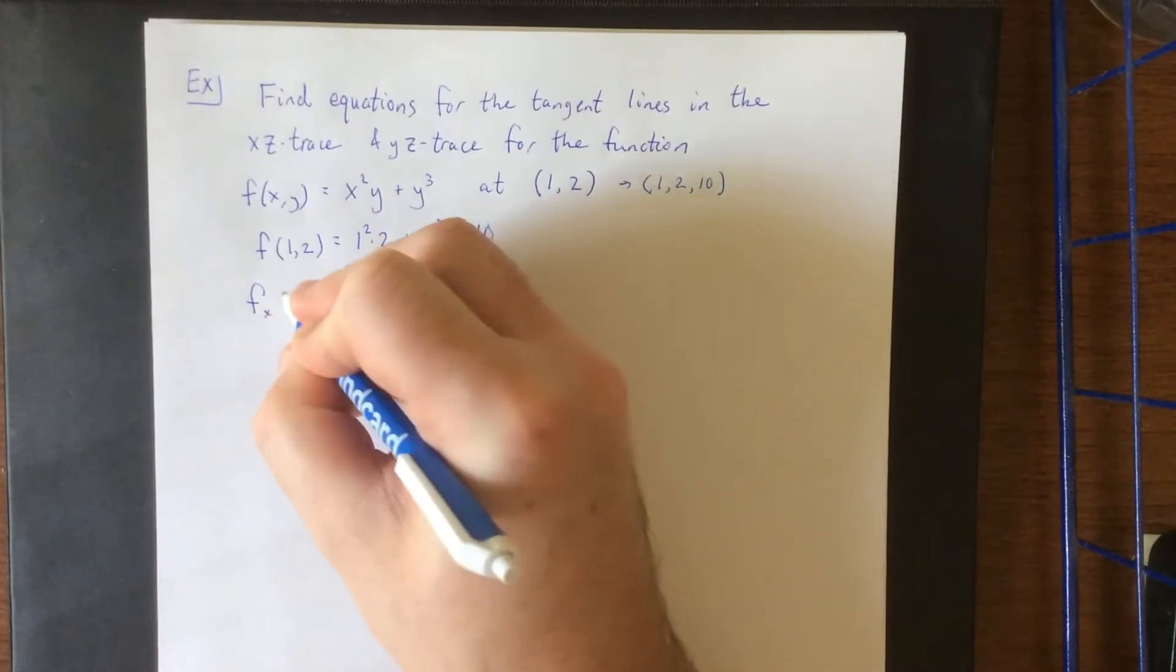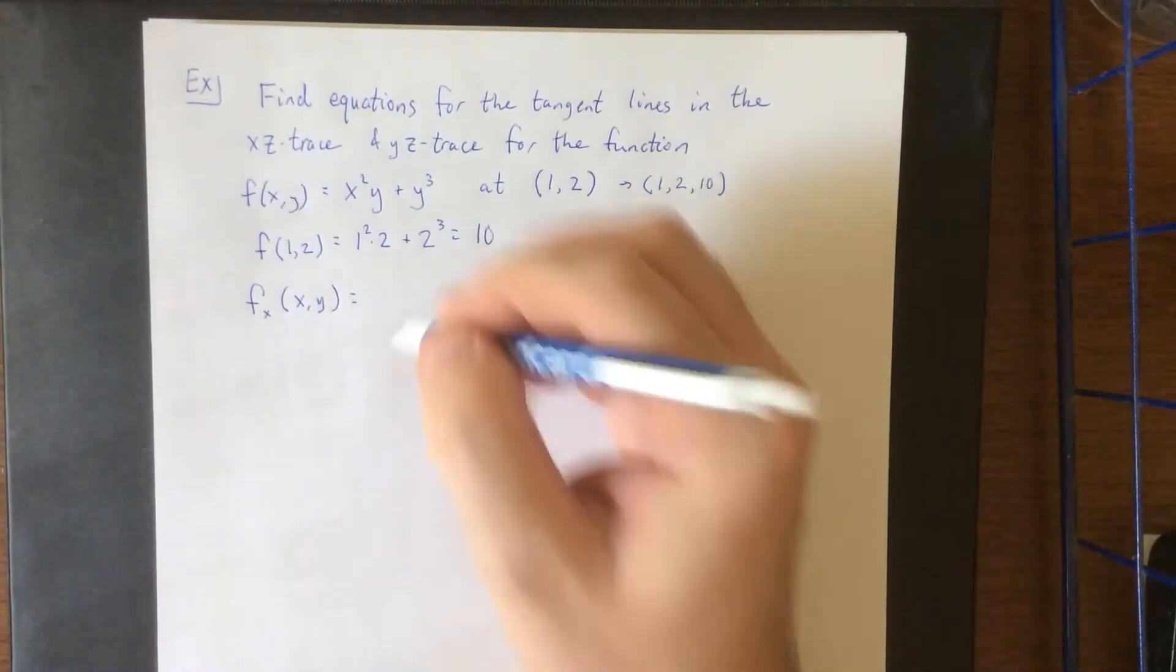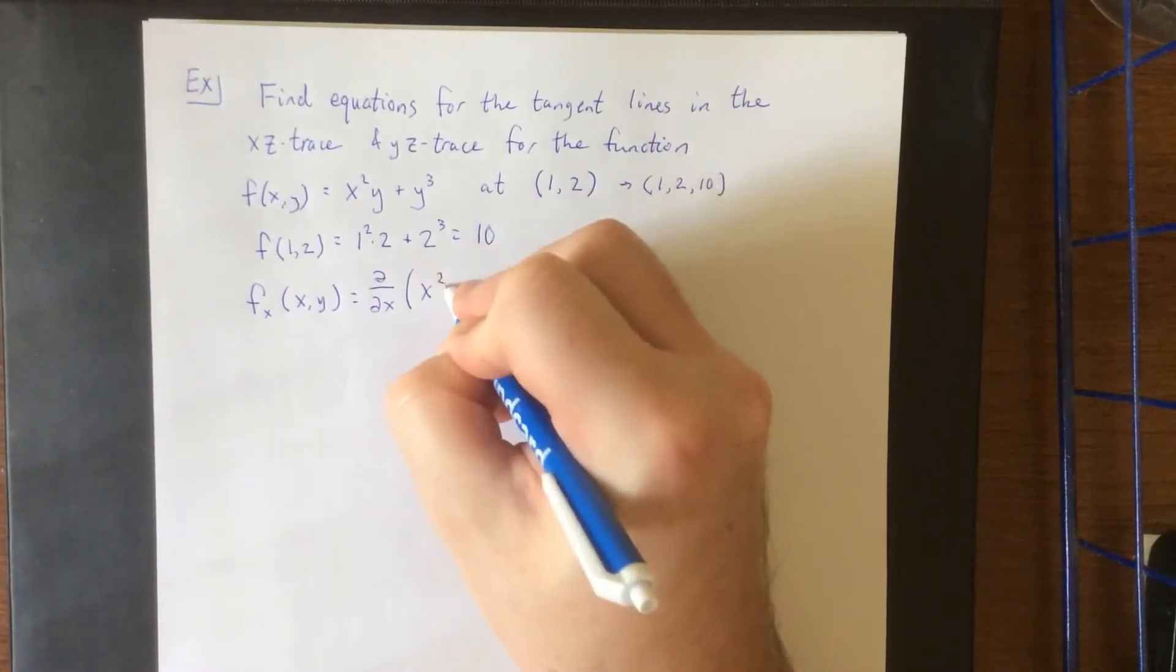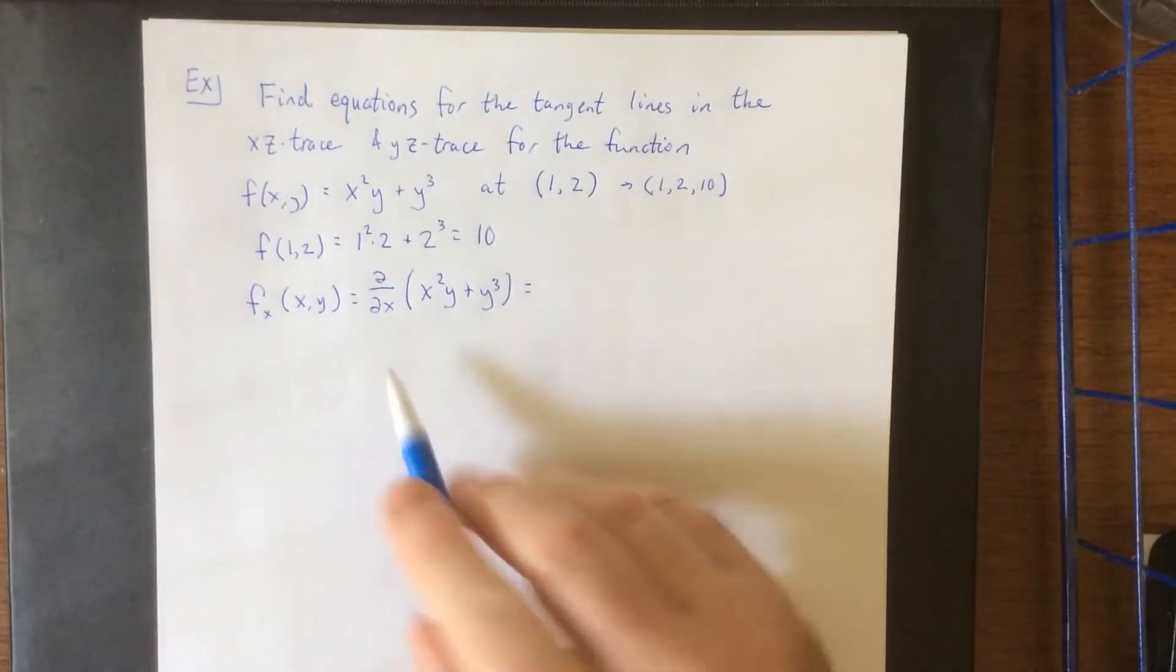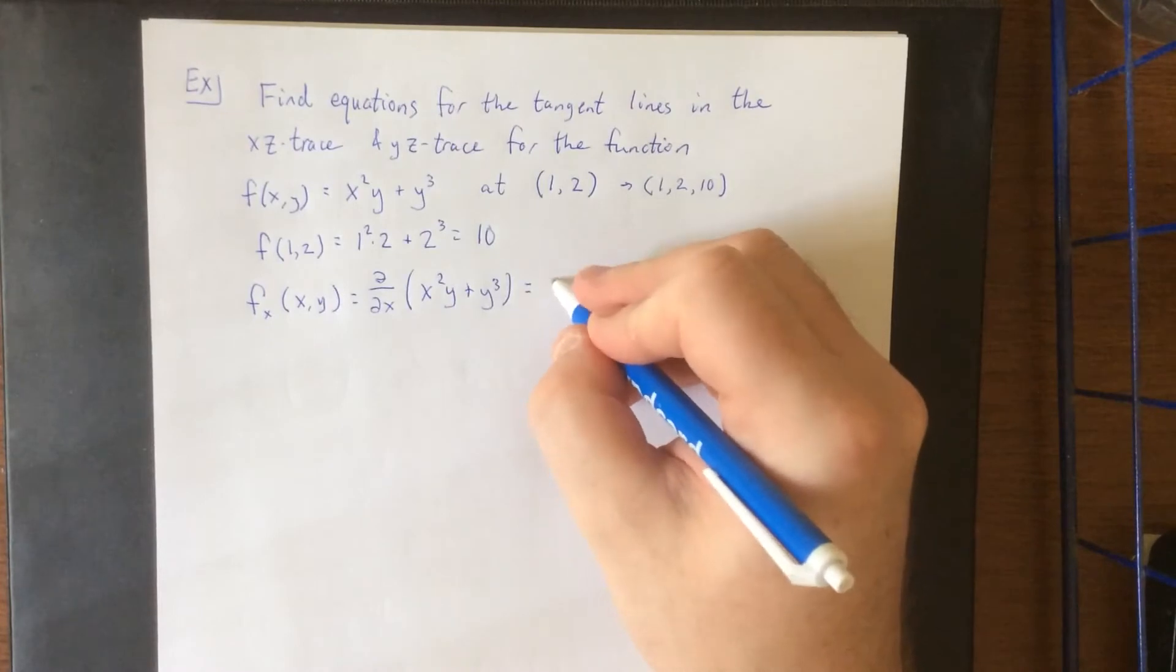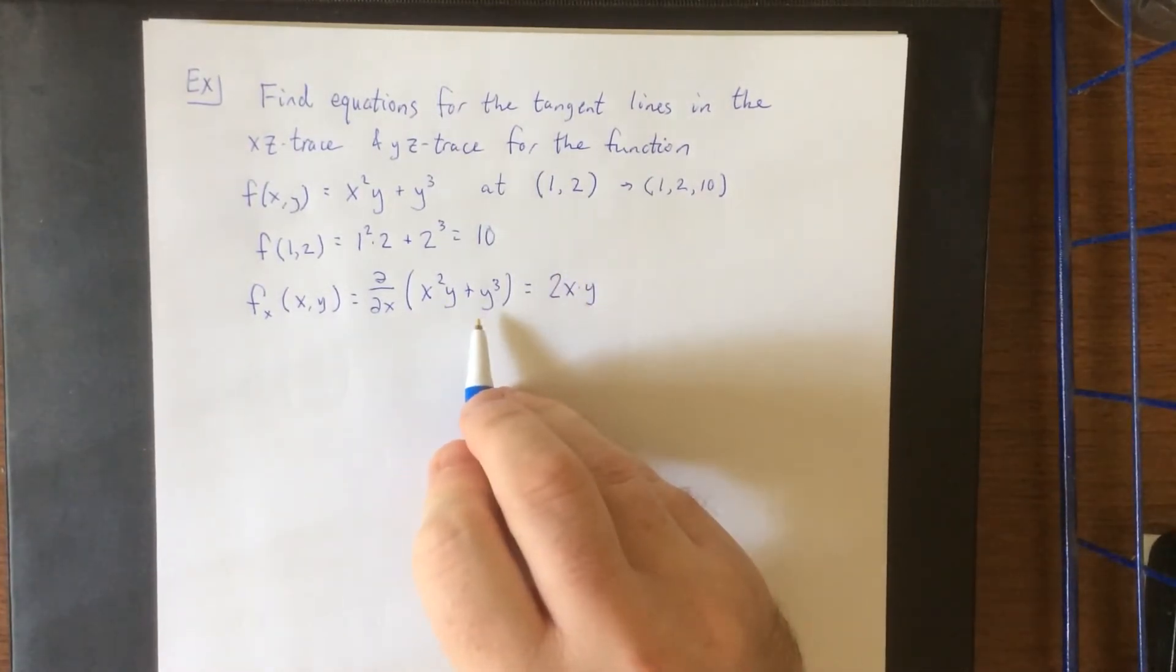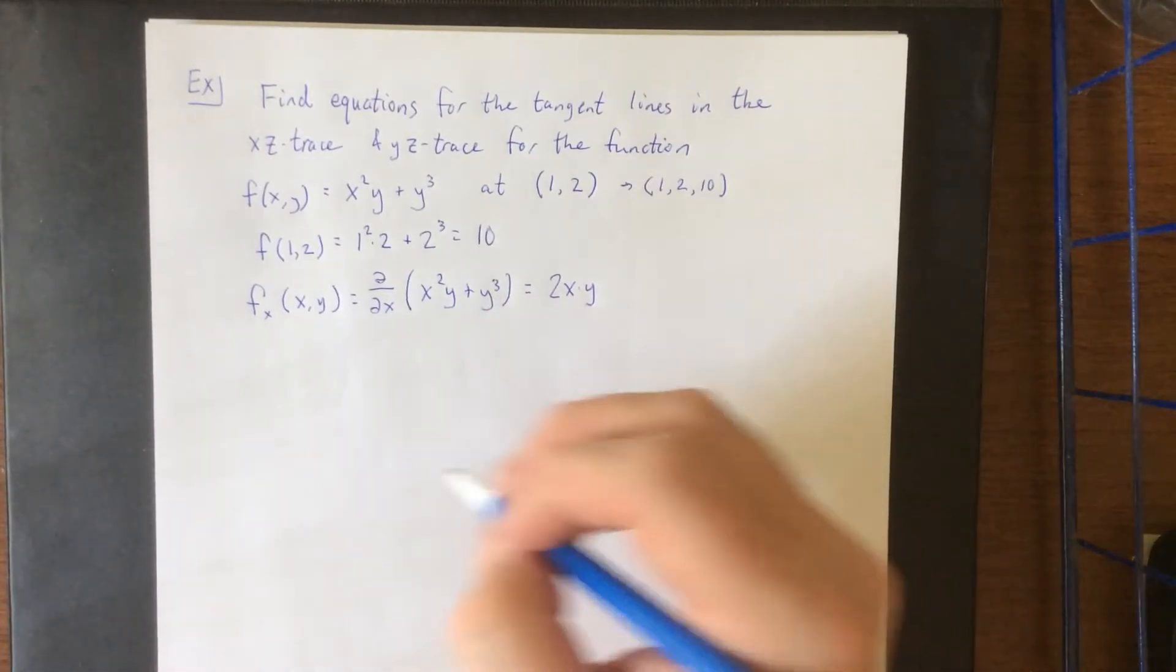First we'll take the partial derivative of f with respect to x. So partial derivative with respect to x of the function x squared y plus y cubed. Treating y as a constant we'll differentiate the x squared. We'll get 2x times that constant y and then the plus y cubed will become plus 0 due to the fact that y is currently being treated as constant.